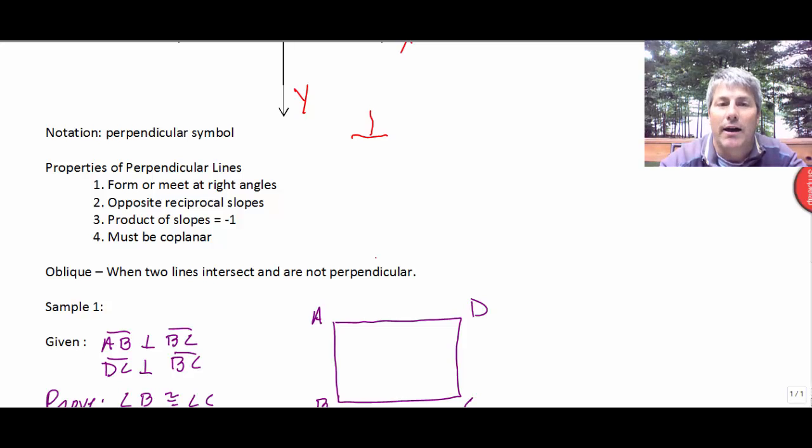Oblique lines are two lines that intersect and are not perpendicular. So I wouldn't say it's the opposite, but it's just a different kind of intersection. You can intersect perpendicular and you can intersect oblique.